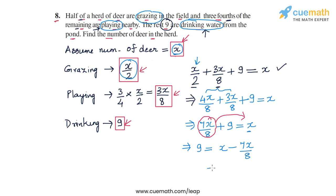Taking the LCM, this equals 8x minus 7x by 8, and 8x minus 7x is x. So I get x by 8.